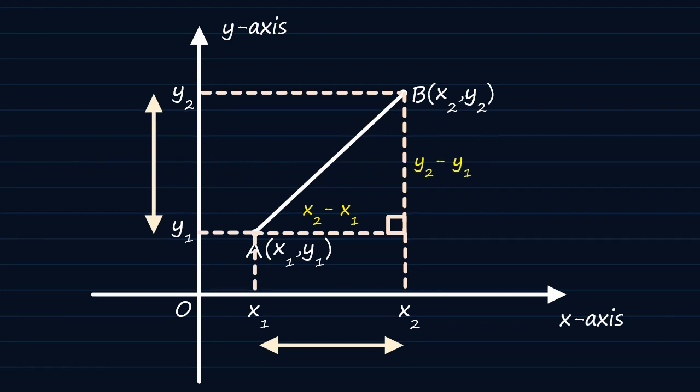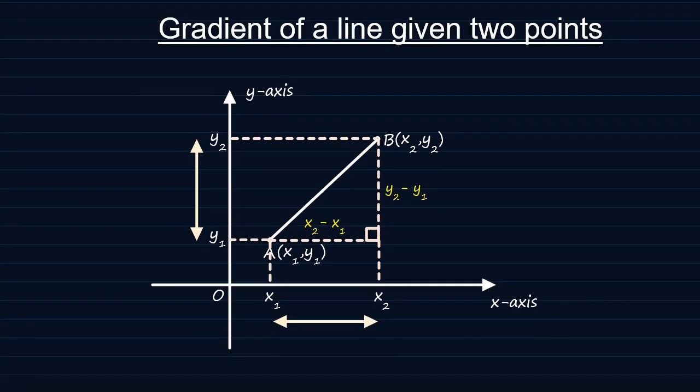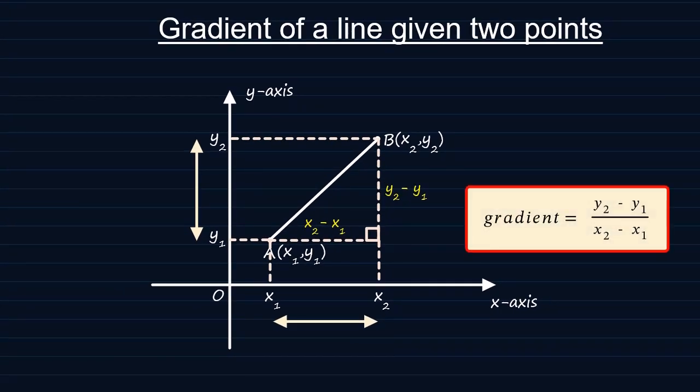Therefore the gradient of the line ought to be y2 minus y1 over x2 minus x1, where y2 minus y1 is change in y and x2 minus x1 is change in x.